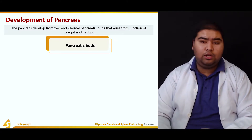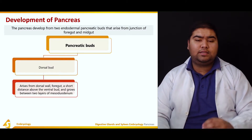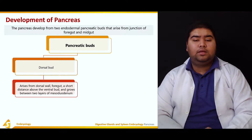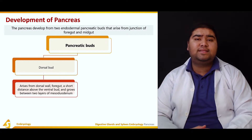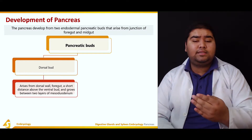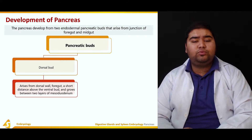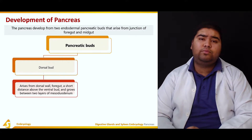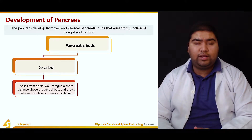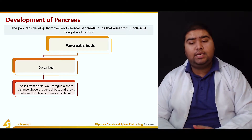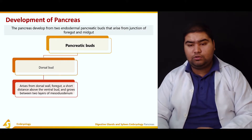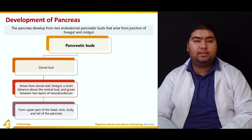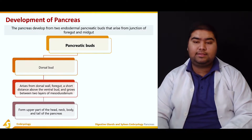There is a dorsal bud and a ventral bud. The dorsal bud arises from the dorsal wall of the foregut — that is, towards the back, towards the vertebral column. It arises a short distance above the ventral bud and grows between the two layers of the mesoduodenum. The dorsal pancreatic bud forms the upper part of the head, the neck, the body, and the tail of the pancreas.